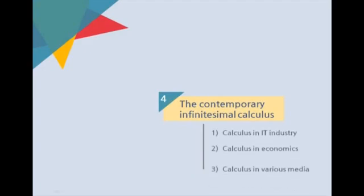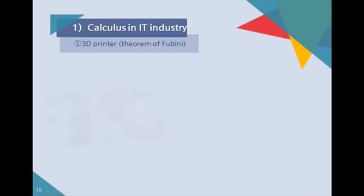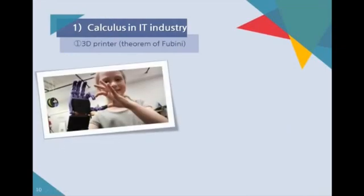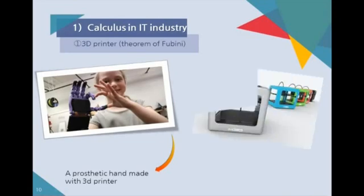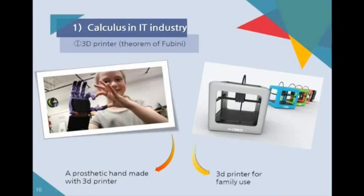There are many people who know that there is a hidden mathematics principle in 3D printer called Theorem of Fubini. The notion of 3D printer starts with infinitesimal calculus. After scanning a 3D object, it prints through the flat surface by slicing the object. It is really similar to integral calculus by adding the small elements.